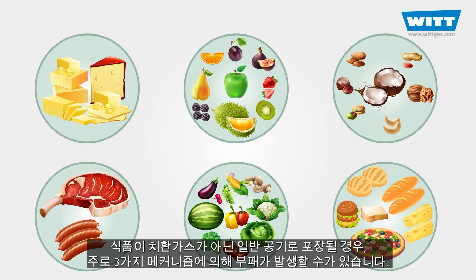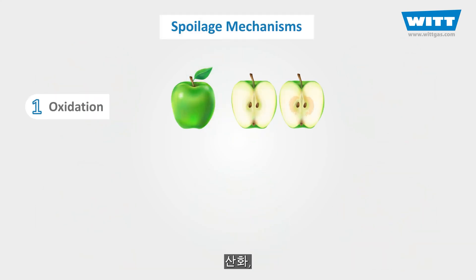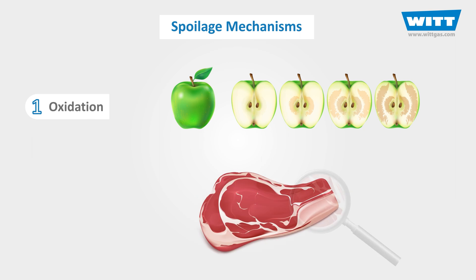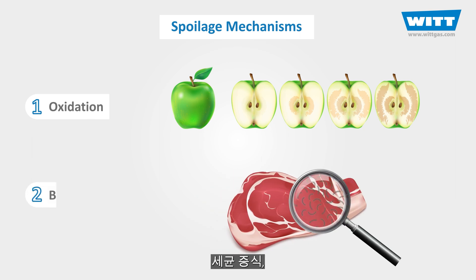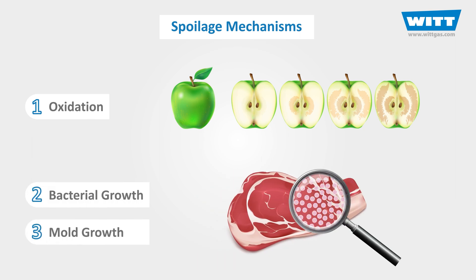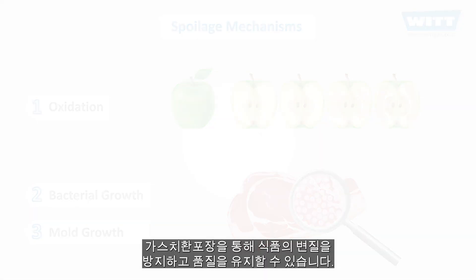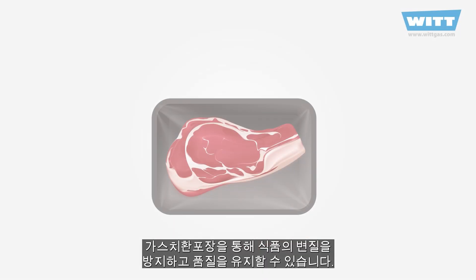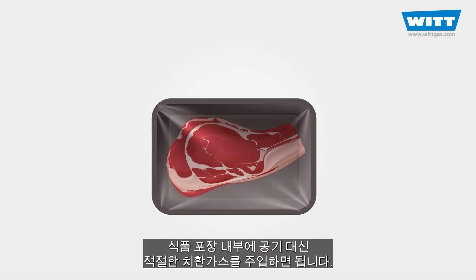When packed in air, food is susceptible to three main spoilage mechanisms: simple oxidation, bacterial growth, and mold growth. However, all of these can be suppressed or reduced by packaging the food in the appropriate modified atmosphere.